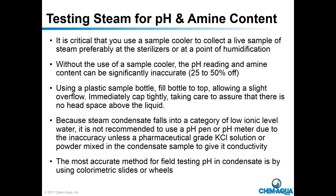CO2 gassing off, temperature differences, and vented condensate receiver tanks are not good places for checking steam pH and amine content. When collecting a sample to run a pH or amine test, collect it in a plastic sample bottle at the very top, allowing a slight overflow, then immediately cap tightly with no head space above the liquid. Then you can send it to the lab, or check the pH an hour later, and you'll have a fairly accurate pH and amine concentration.